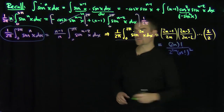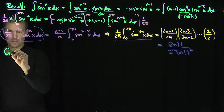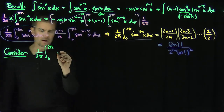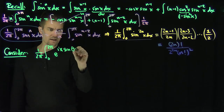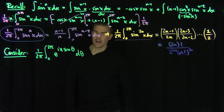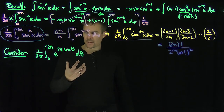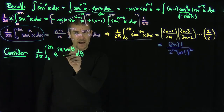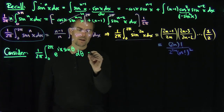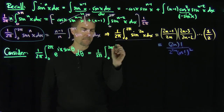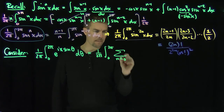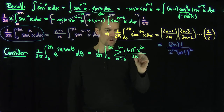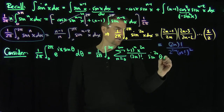Now we're going to use this to derive the Bessel formula. We're going to consider (1/2π) times the integral from 0 to 2π of e^(ix sin θ) dθ. I'm going to Taylor expand this, and notice that all the odd powers of sine are going to vanish when I integrate between 0 and 2π, so I only get even powers. This gives (1/2π) times the integral from 0 to 2π of the sum over n from 0 to ∞ of (−1)ⁿ x²ⁿ / (2n)! times sin²ⁿ(θ) dθ.